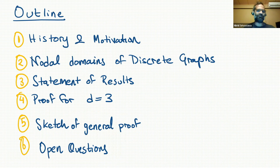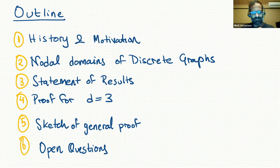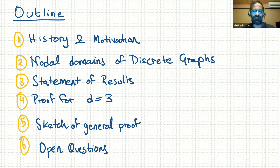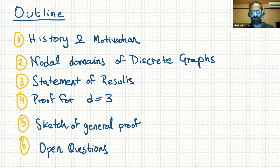Here's an outline of the talk. I'll start by giving some history and motivation from other areas in math, like spectral geometry. Then I'll talk about nodal domains of discrete graphs and say what's known about them. Then I'll tell you what we proved, show a proof of a weaker version of a special case, sketch the ideas in the general proof, and end with some questions.